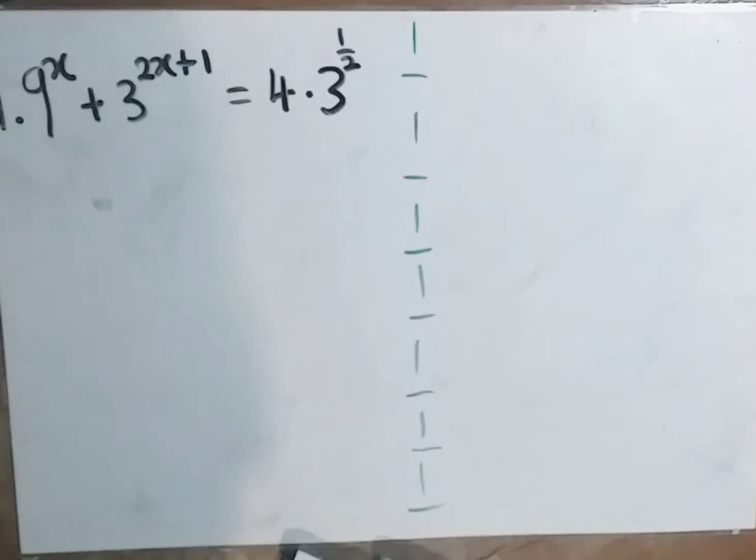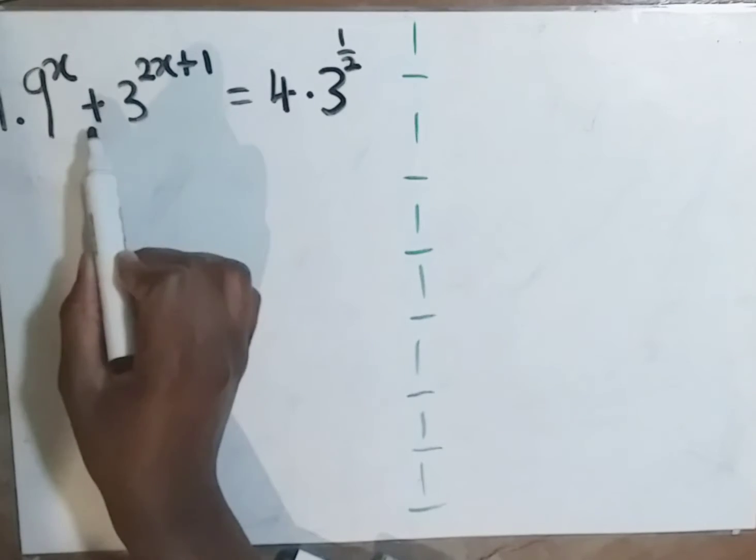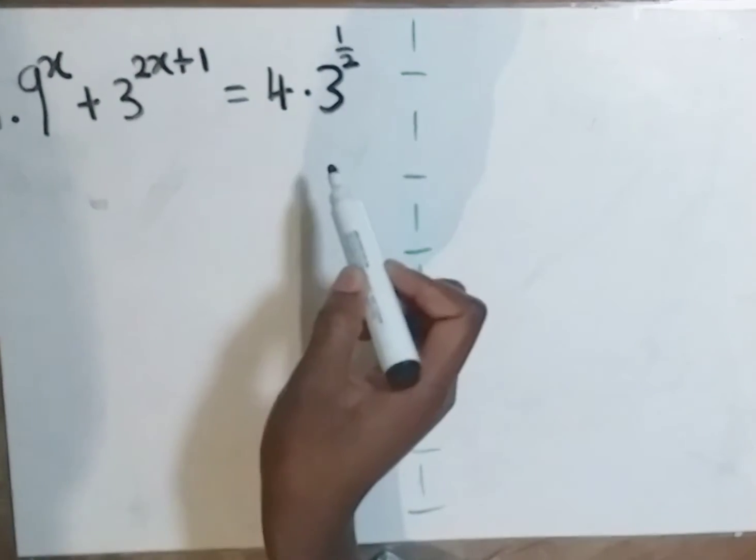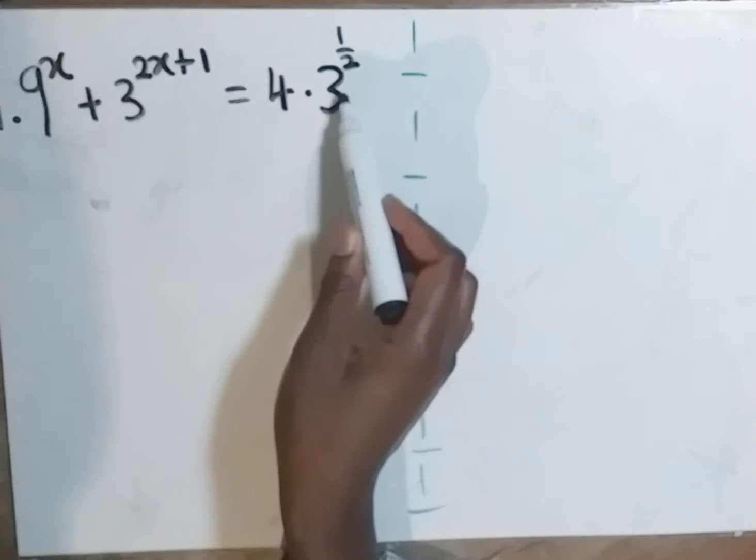How do we solve an equation in this form? Say we have 9 to the power x plus 3 to the power 2x plus 1, all equal to 4 times 3 to the power half.